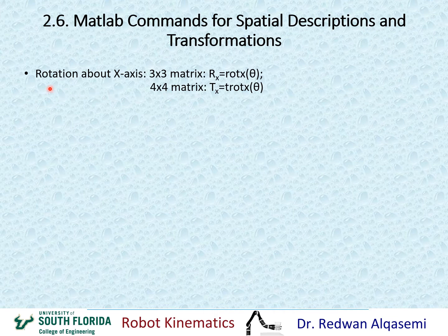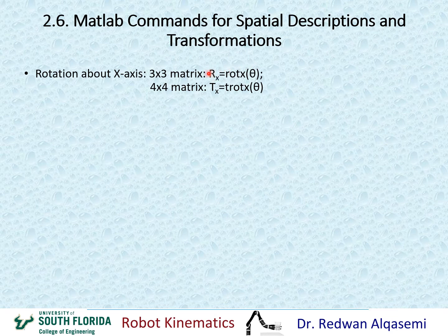The first command is rotation about the x-axis. You can do it in two different ways. If you want a 3x3 matrix, rx equals rotx. This is a function, and inside this function there is one argument, which is theta, the value of rotation. You can call this rx or whatever other name you want.